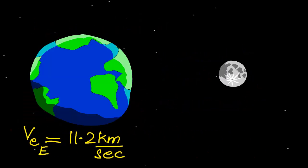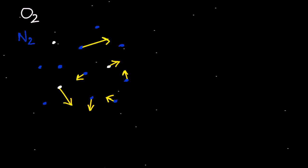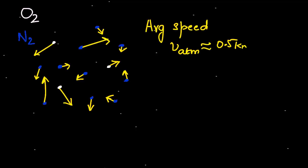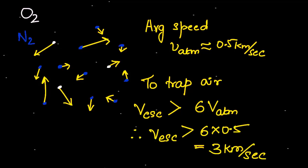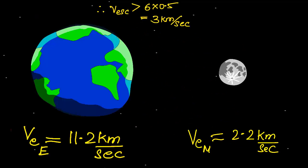Our atmosphere has an average speed of about half kilometers per second at normal conditions of pressure and temperature. To trap this atmosphere for billions of years, the escape speed must be at least five to six times more, which is about 2.5-3 kilometers per second. Hence earth can easily trap this atmosphere, while the moon cannot.